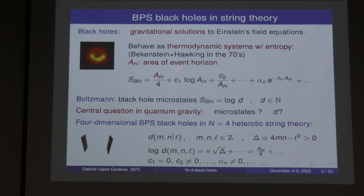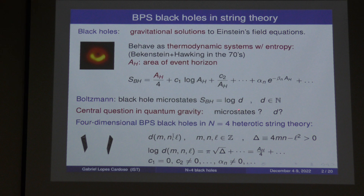On the other hand, entropy is also a measure for the number of microstates of the system. This entropy should also be derivable as the logarithm of the number of microstates. The central question in quantum gravity is: what are these microstates, and can you count them? It's known that you can do this in certain N=4 string theory models. In this talk we'll be dealing with four-dimensional asymptotically flat BPS black holes arising in N=4 heterotic string theory.